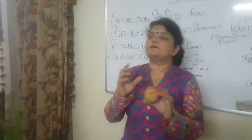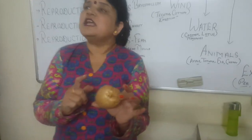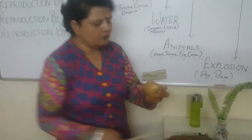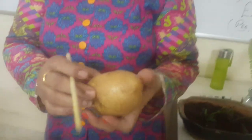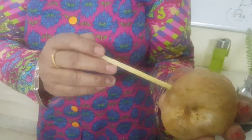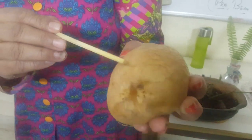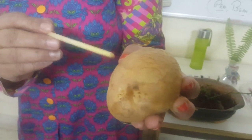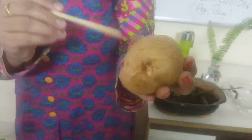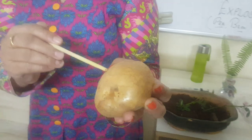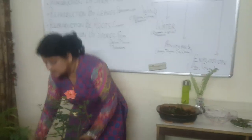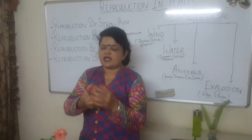Reproduction by stem cutting is also found in the potato. You can see the eye of the potato — a half moon-like structure. Your potato has so many eyes in it. Potato is the stem of a plant, so reproduction is done here by stem cutting as well.